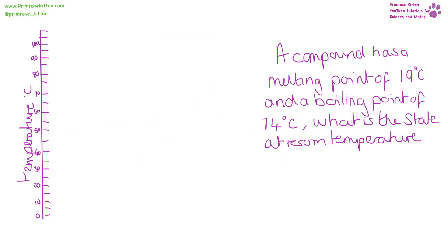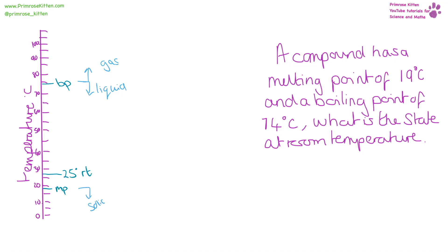A compound has a melting point of 19 degrees and a boiling point of 74 degrees. What is the state at room temperature? Room temperature is about 25–27 degrees. So when it boils, it turns from a liquid into a gas — above 74 degrees it is a gas. Below 74 it is a liquid, and below 19 it is a solid. So at room temperature it is going to be a liquid.